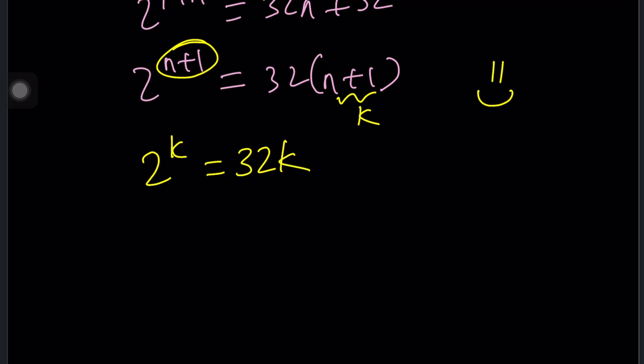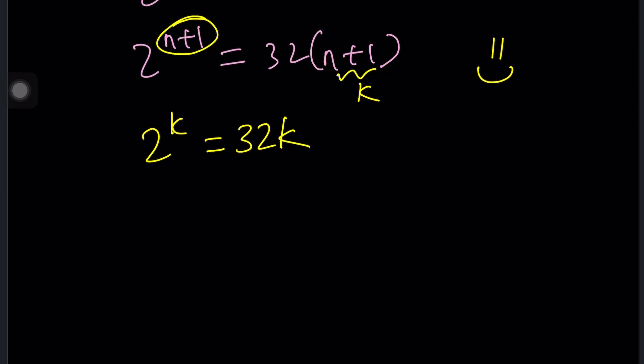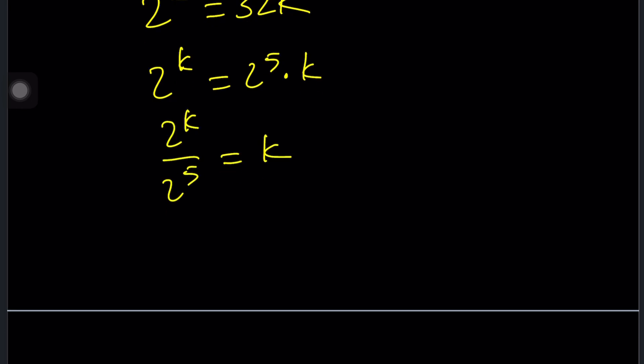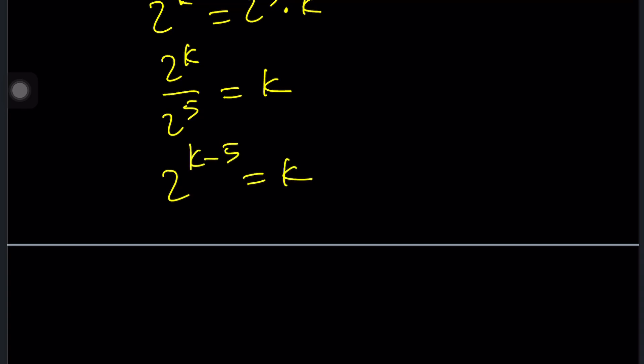Obviously, this equation is a lot easier to solve by guessing than the original one. We have an interesting equation and my idea here is to bring the 2 to the k and 32 together because 32 is a power of 2. We can write this as 2 to the 5th and then divide by 2 to the 5th, and that's going to give us 2 to the power of k minus 5 equals k. I really turned this into something nice and easy to guess.